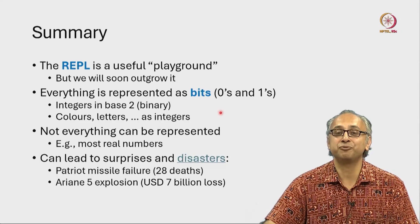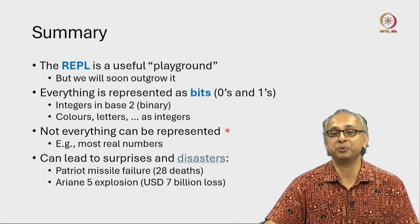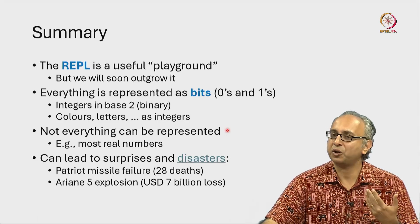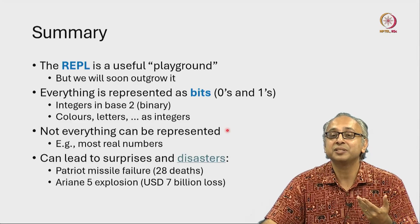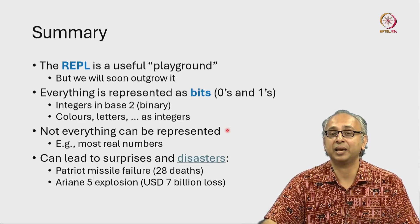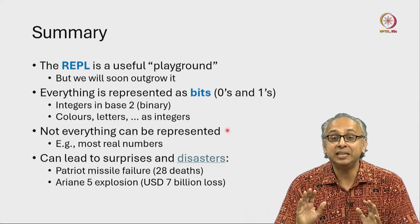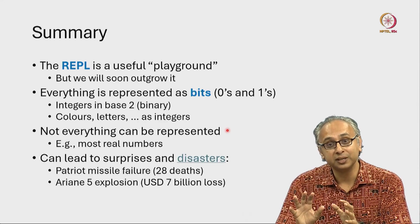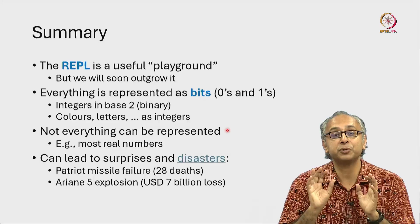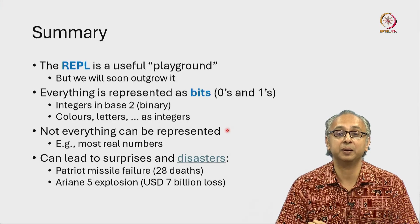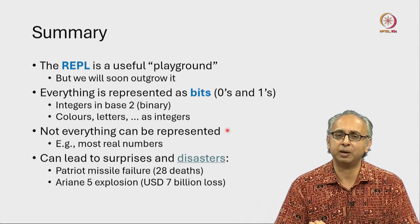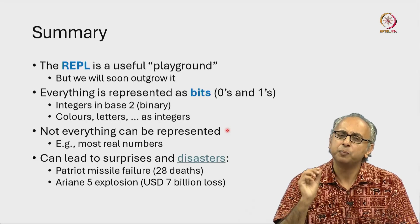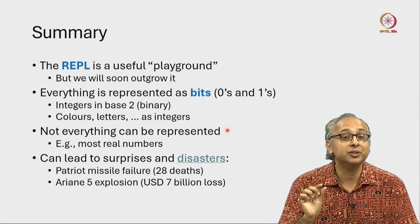Not everything can be represented. For example, most real numbers cannot be represented accurately. Even simple seeming numbers like 0.1, at least when you try to represent them as floats, you do not get a precise representation in Python. There are other ways in which you can represent the value 0.1 or one tenth precisely, but not as a float.